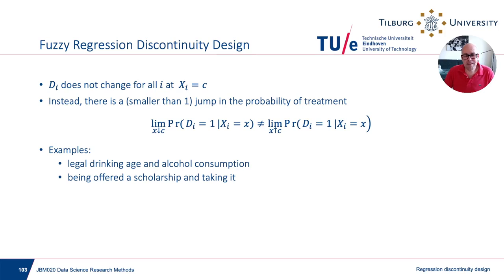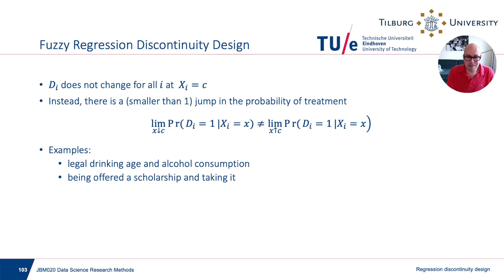Another example related to scholarships: before I described it as if everyone offered a scholarship takes it. A more refined situation is where people above the GPA cutoff c are offered a scholarship but might not take it. The probability of taking it is always zero when xi is below c, but it might not be one when xi is just above c — people might change their mind or not need it. So the probability jumps, but by less than one.